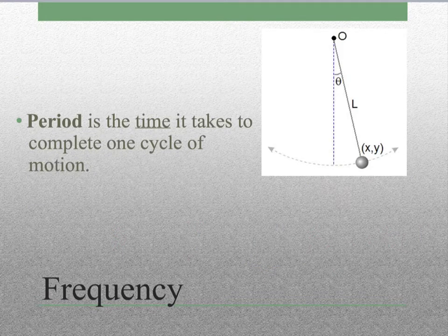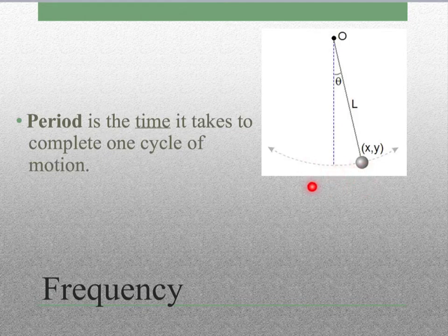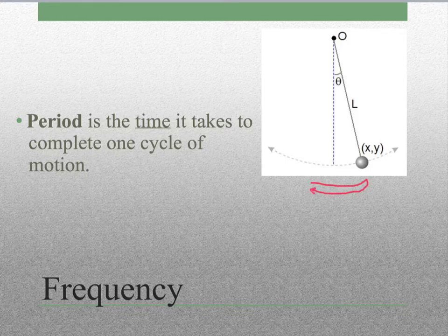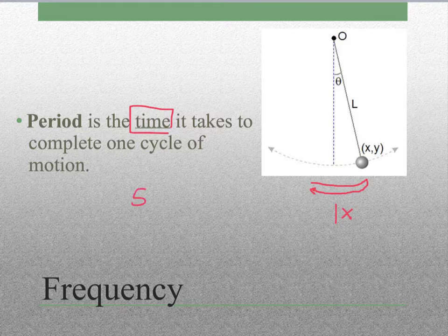Now we're going to talk about period. Period is the time it takes to complete one cycle of motion. Instead of seeing how many times our pendulum swings back and forth, we ask how much time does it take to go back and forth just one time. Because this is a time that we are measuring, our unit is most commonly going to be the second. So we ask ourselves: how long?